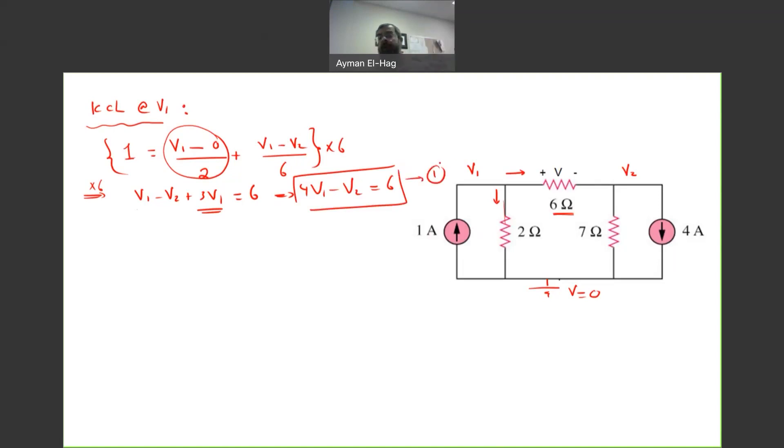Now, we will go for the next node, which is V2. So, KCL at V2. So, remember, how many unknowns we have? Only V1 and V2. So, how many equations do I need? Only two to solve for V1 and V2.